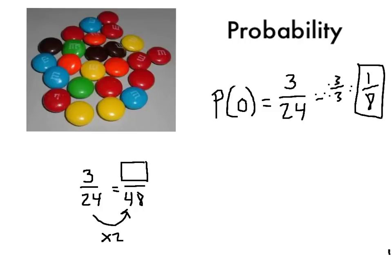So I can do the same thing on top. We know about equivalent fractions by now. So 3 times 2, I want to do the same thing on the top as we did on the bottom. 3 times 2 is 6. So if I had 48 M&Ms, that means I should have 6 that are orange. I should, if things stay the same.